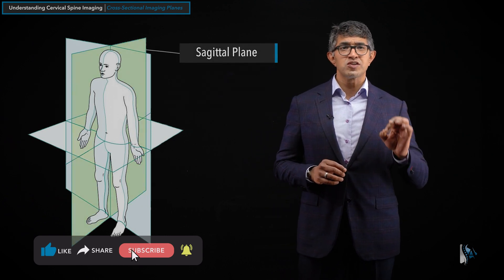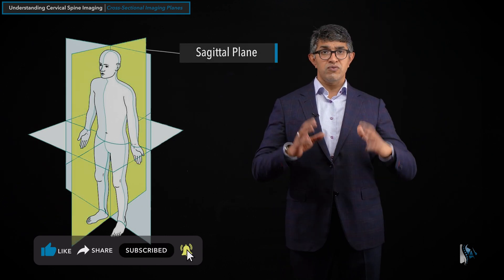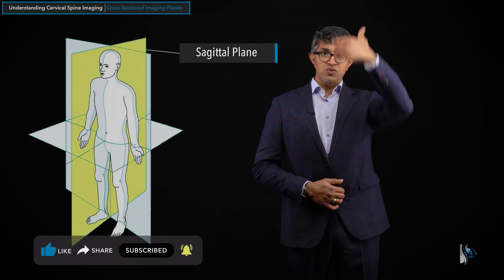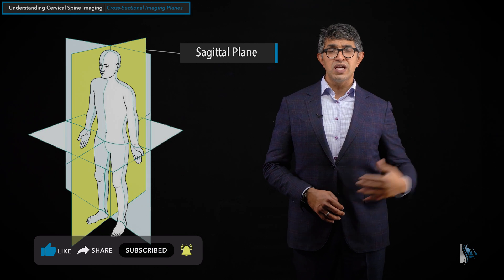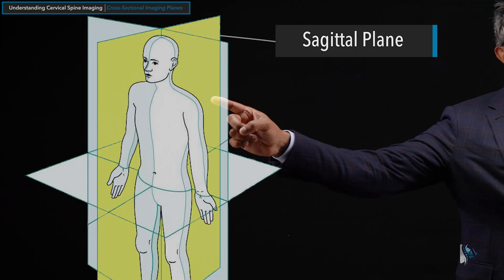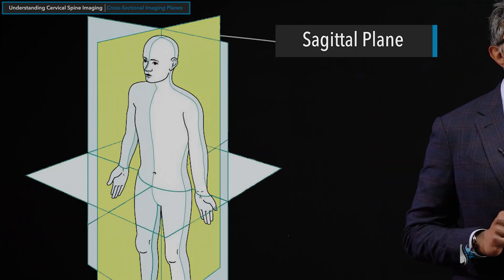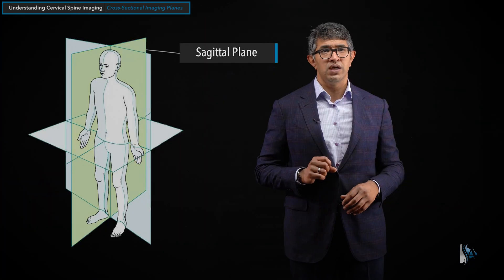The first slice to talk about is a slice right down the middle, like right through the middle of the screen. If you took a slice and looked from the side, that would be this plane right here. That is called the sagittal plane.